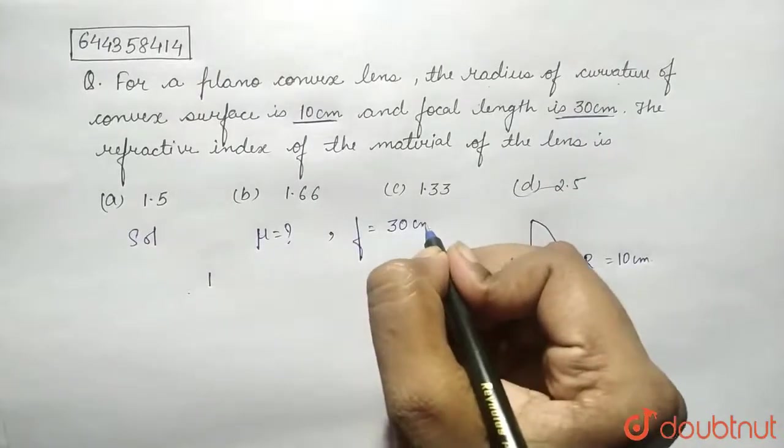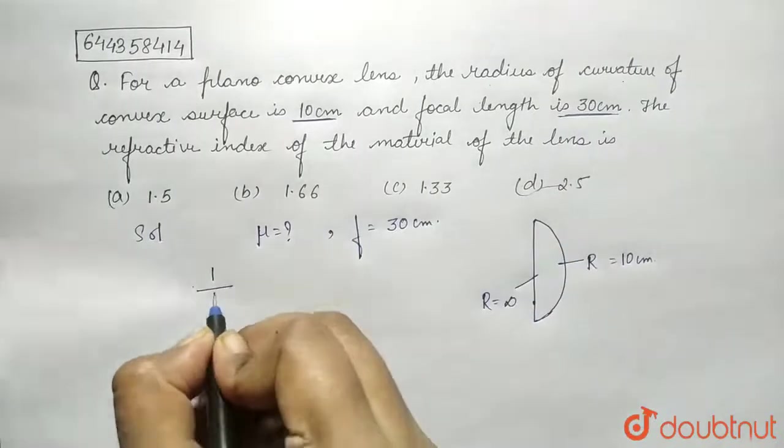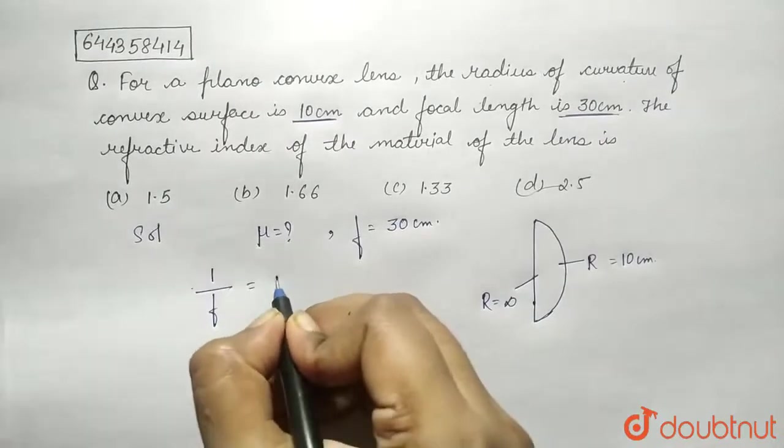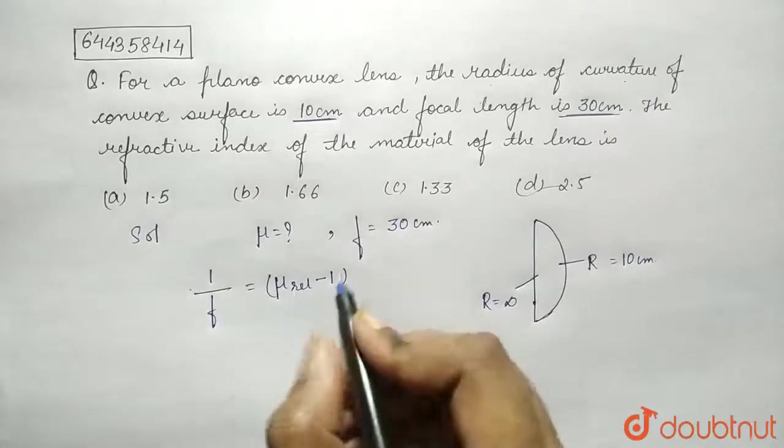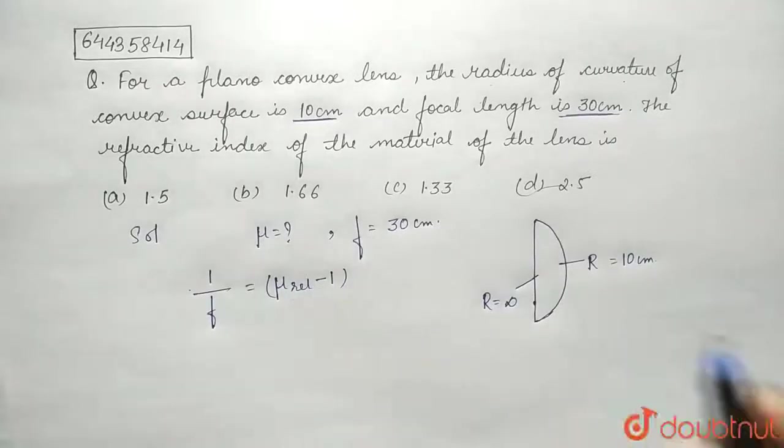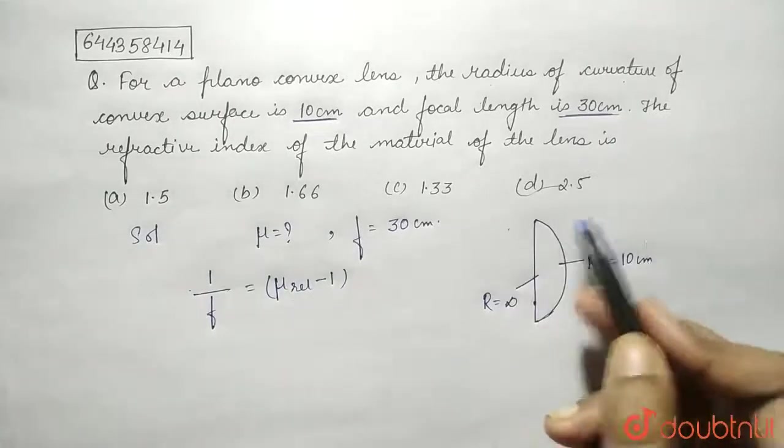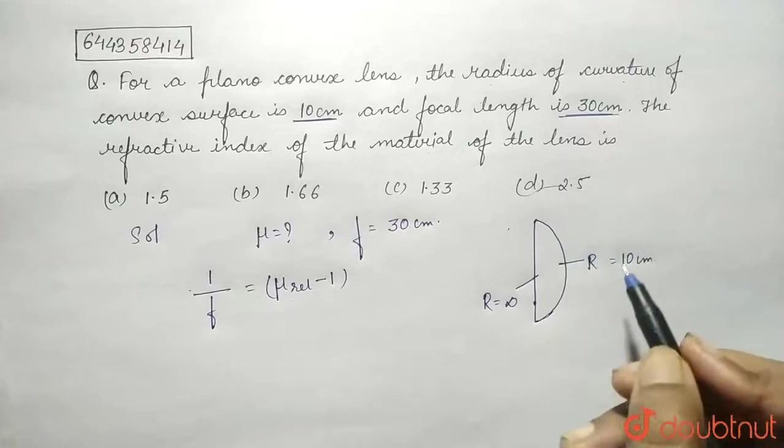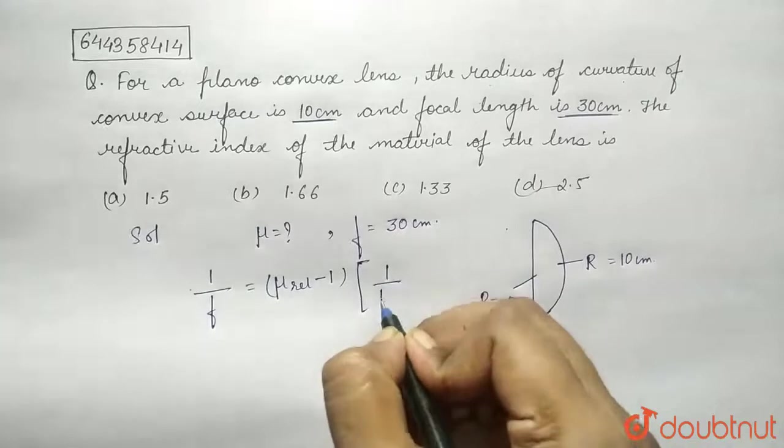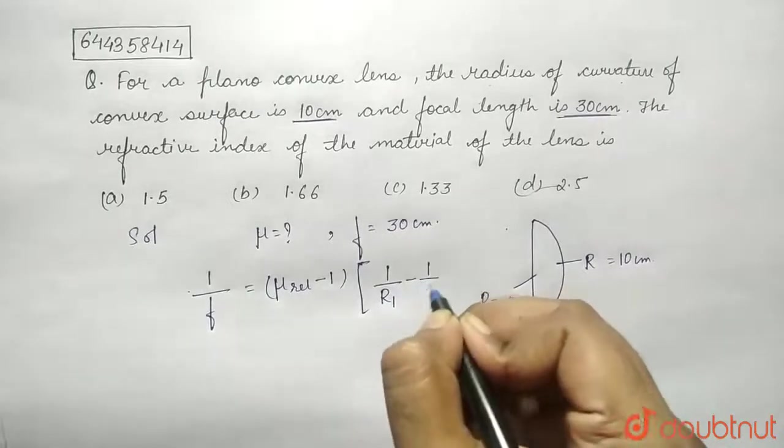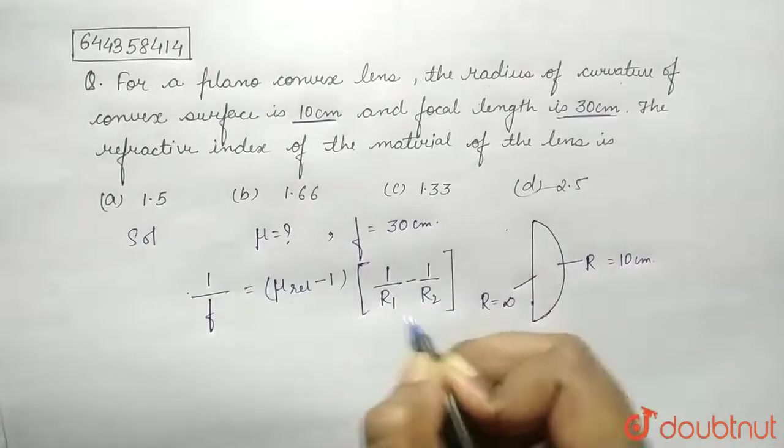which equals to 30 centimeter. So we know that 1/f = (μ_relative - 1), where μ_relative will be equal to μ_medium. Since nothing is given, we will consider the other medium as air, so 1/r1 minus 1/r2.